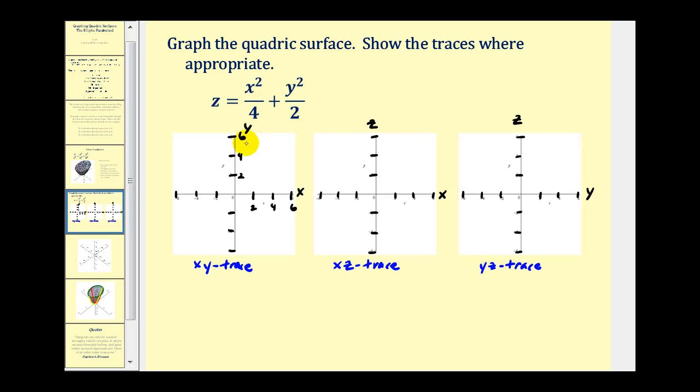So to find the xy trace, we'll set z equal to zero. That would produce the equation zero equals x squared over four plus y squared over two. This looks like it would be an ellipse, but if it's equal to zero, the only point that would satisfy this equation would be the origin when x is zero and y is zero. So the xy trace is actually just a point at the origin.